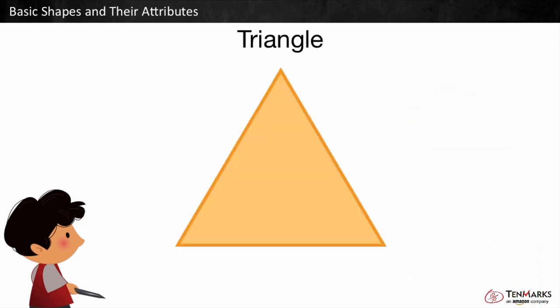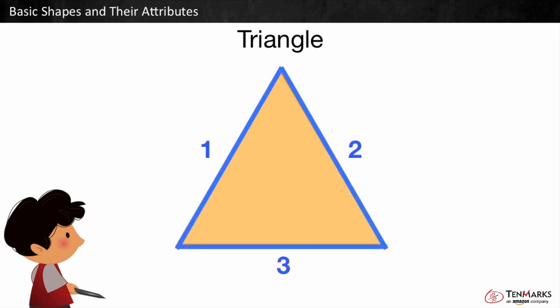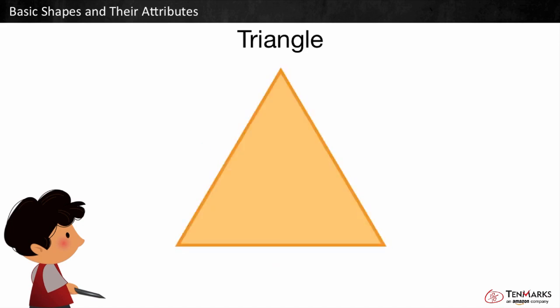This is a triangle. It is closed and has one, two, three straight sides. A triangle also has one, two, three corners.